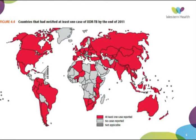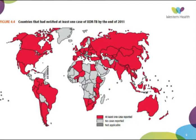This slide shows probably the most concerning thing: TB that is resistant to basically everything. This is XDR TB — extensively drug-resistant TB — and it is essentially a worldwide problem, resistant to everything we've got so far. The cases reported in Australia — I'd be dubious as to whether they're actually homegrown cases; I think they're more likely to be in the migrant or refugee population.